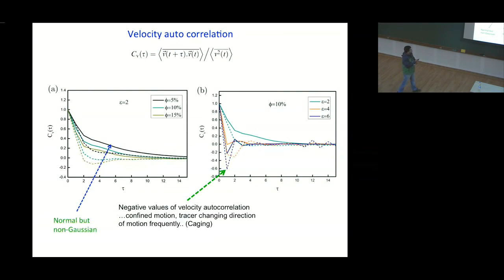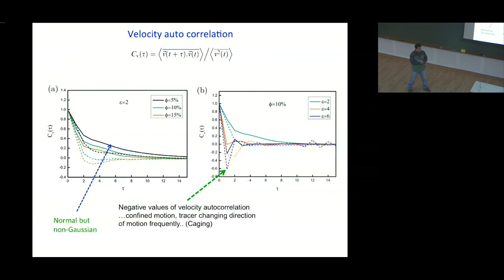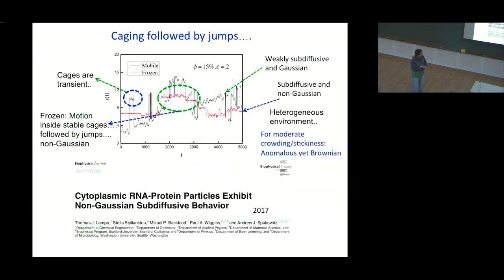Then we looked at the velocity autocorrelation function as a function of time lag. For small volume fraction nothing interesting happens, but if you increase the volume fraction it starts showing negative values — especially at high volume fraction. If I make the stickiness parameter very high (epsilon = 4 or 6), the velocity autocorrelation is highly negative. These negative values are signatures of confined motion — the tracer is caged by the surrounding polymers and changes direction very frequently.